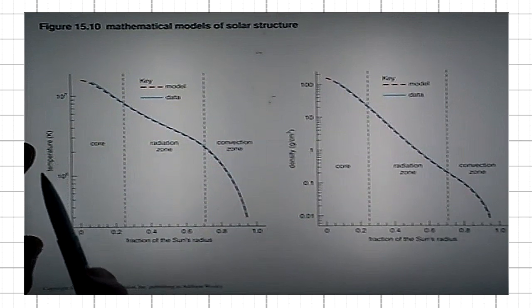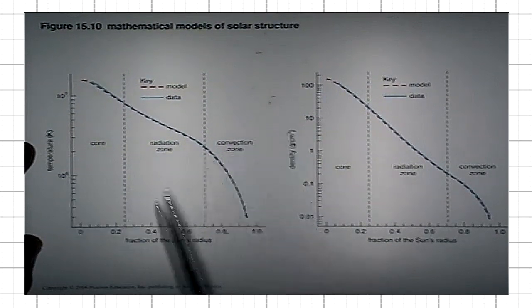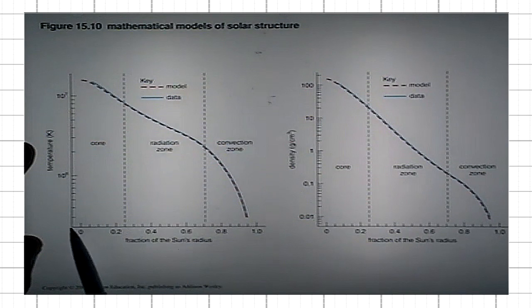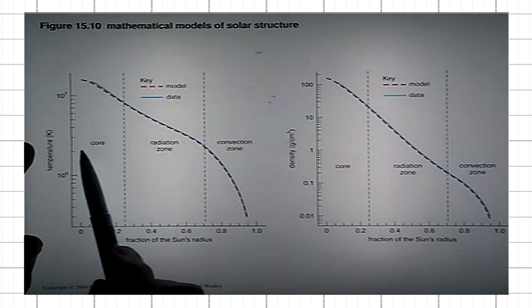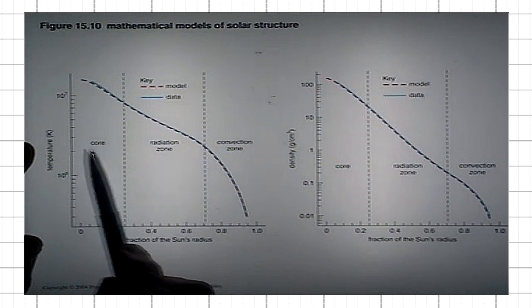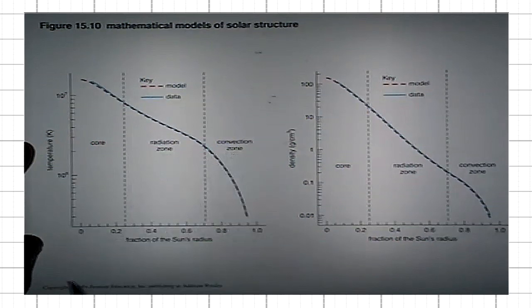Here you have a temperature profile and a density profile as one goes from the center of the sun all the way out to the surface. Different parts: the core radiation zone, convection zone,